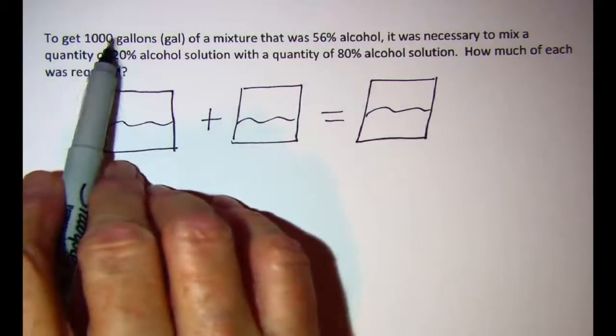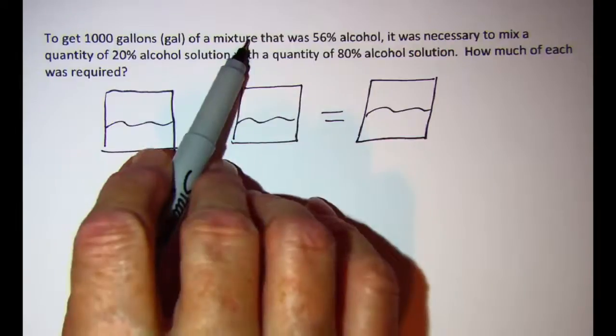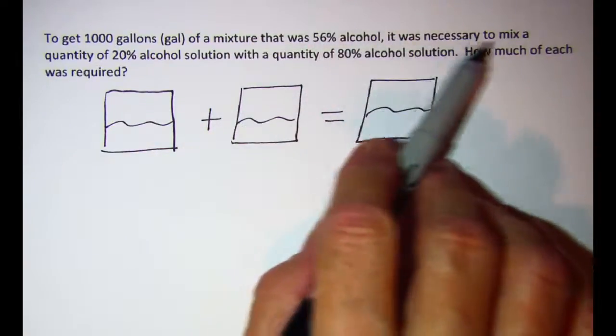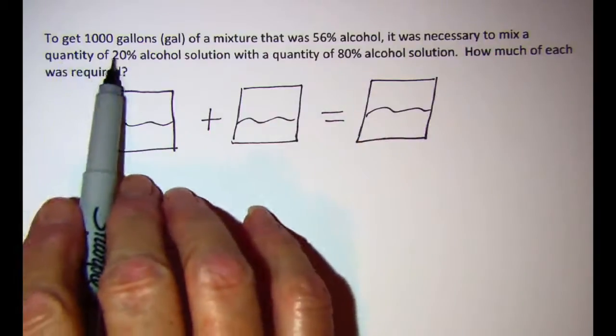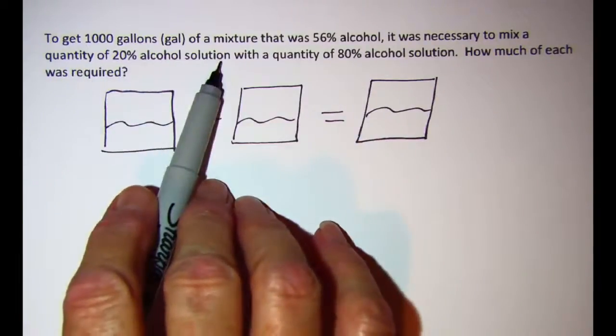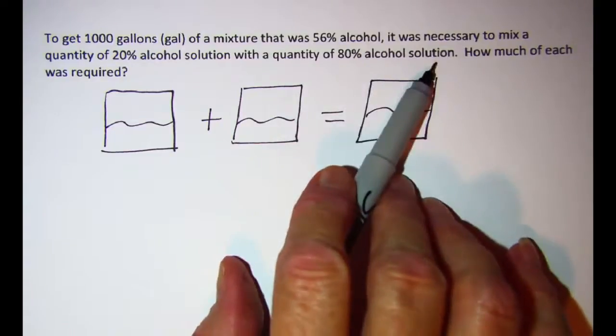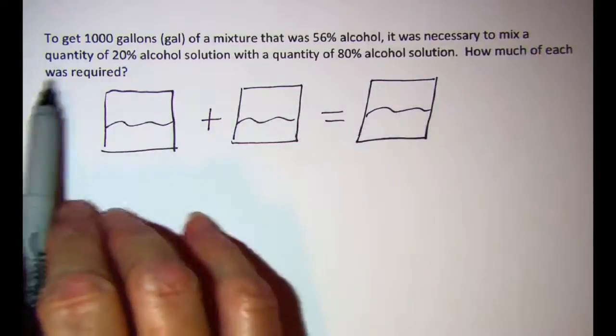To get a thousand gallons of a mixture that was 56% alcohol, it was necessary to mix a quantity of 20% alcohol solution with a quantity of 80% alcohol solution. How much of each was required?